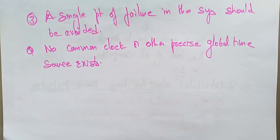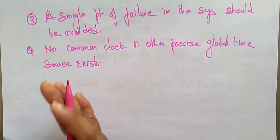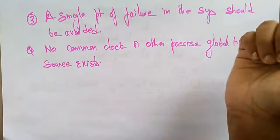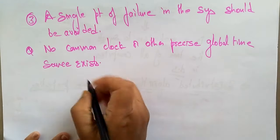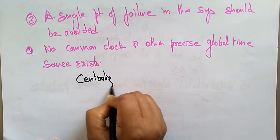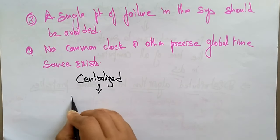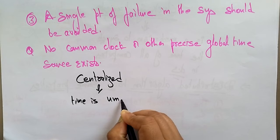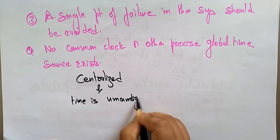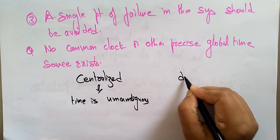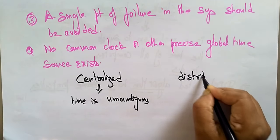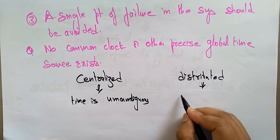In a centralized system, time is unambiguous — when a process wants to know the time, it simply makes a system call. Whereas in a distributed system, time is ambiguous. Remember: in the centralized system time is unambiguous, but in the distributed system the time is ambiguous.